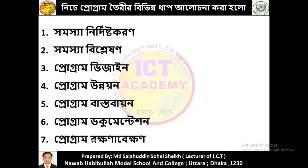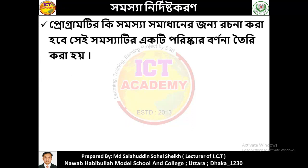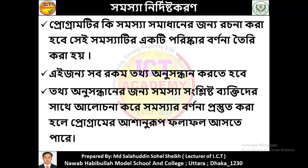The steps of program development through a computer are: 1) Problem identification, 2) Problem analysis, 3) Program design, 4) Program development, 5) Program testing, 6) Program documentation, 7) Program maintenance. Problem identification means clearly defining the problem for which the program is to be written. All related information must be gathered and researched thoroughly.